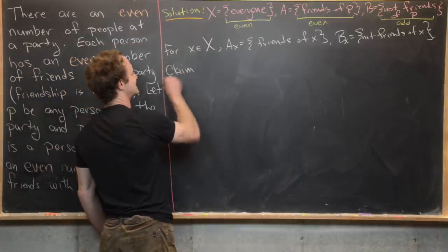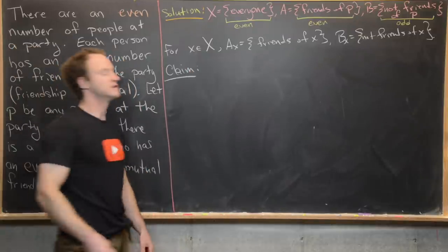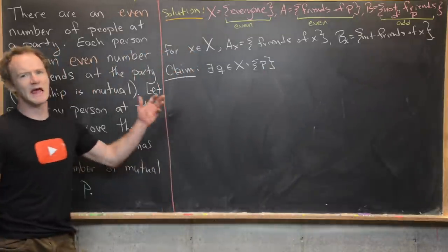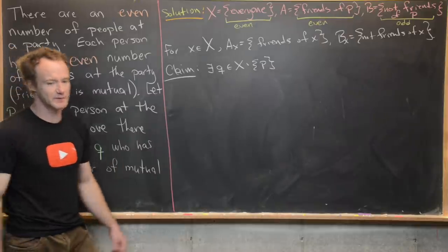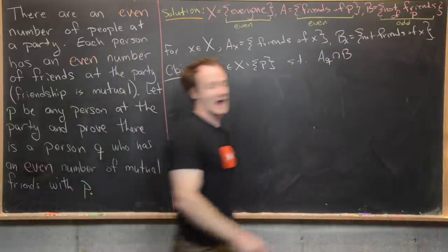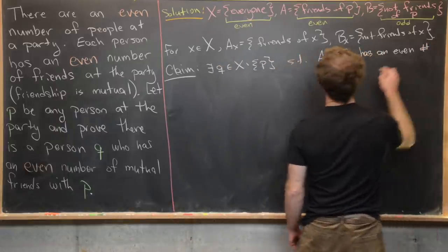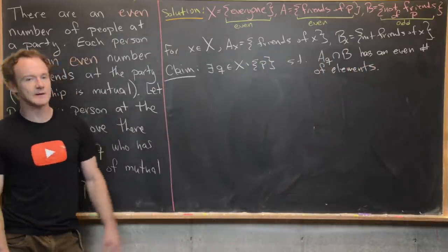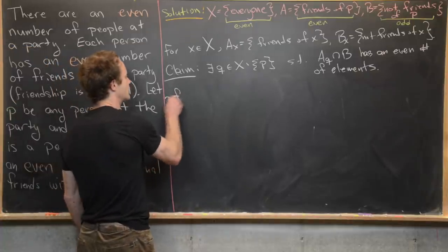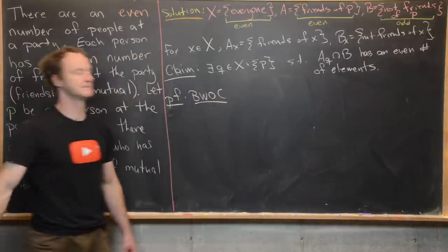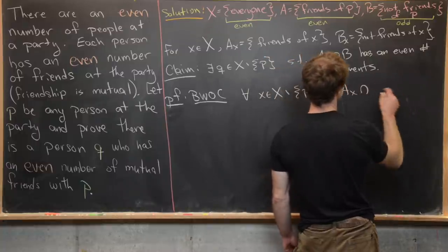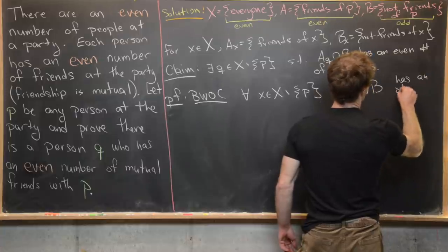Now let's make a claim that will essentially finish everything off. The claim is: there exists a person Q in X minus {P} such that |A_Q ∩ B| is even — that is, the number of friends of Q who are not friends of P is even. We'll prove this by contradiction. Suppose that for all x in X minus {P}, |A_x ∩ B| is odd.